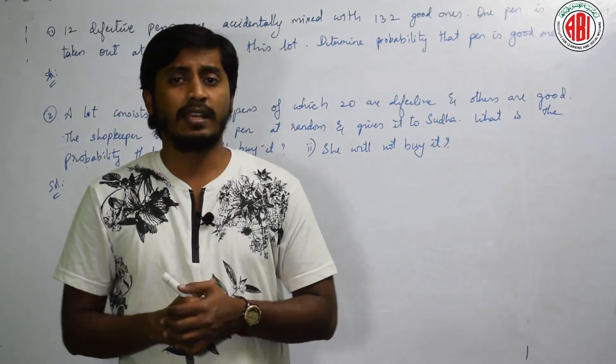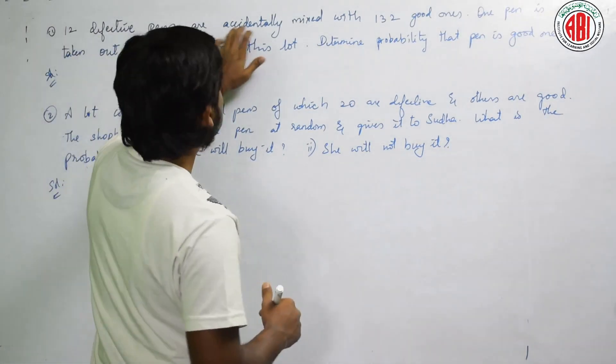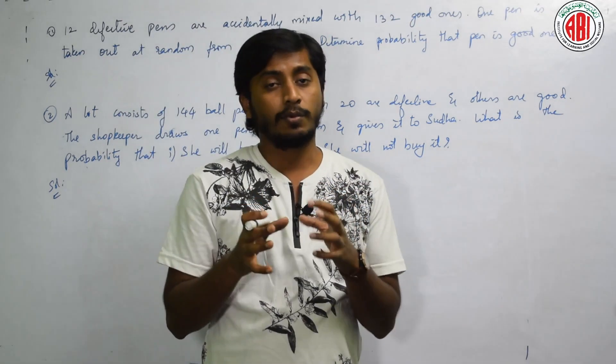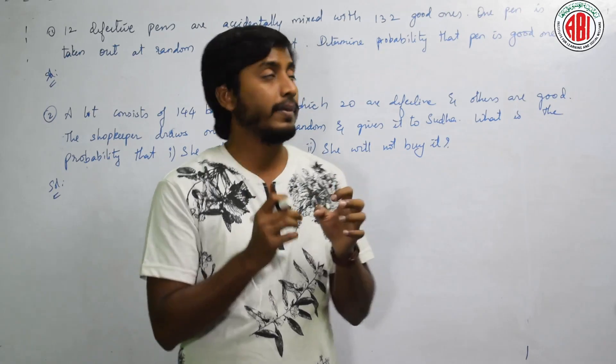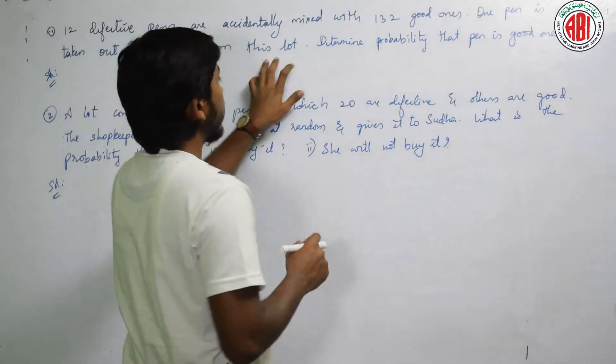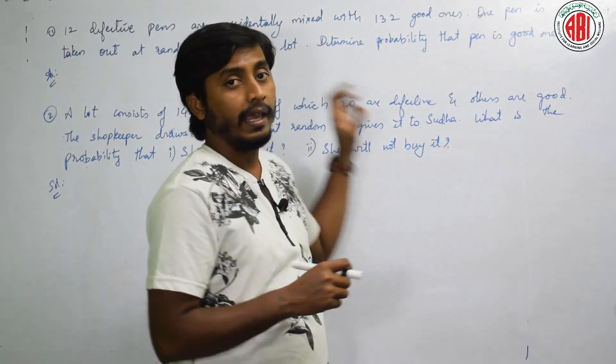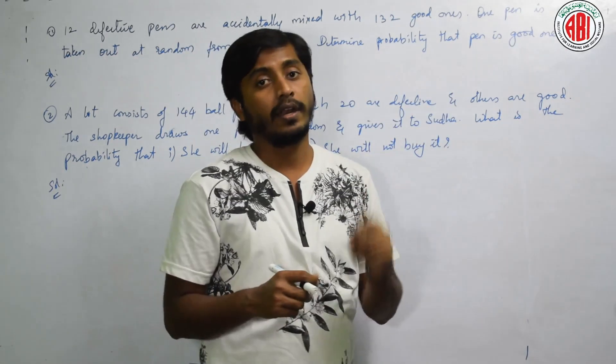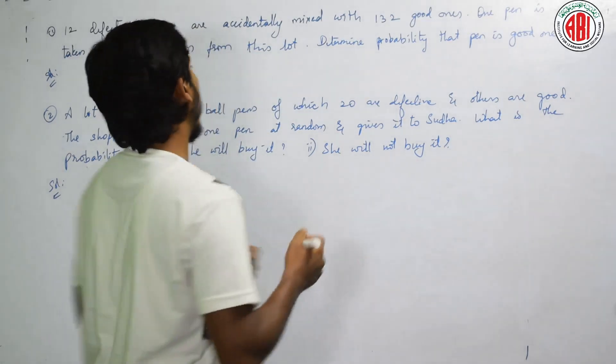See the next question here. The question given here is: 12 defective pens are accidentally mixed with 132 good ones. From this lot, one pen is selected at random. Determine the probability that the pen is a good one. Now we have to check whether the pen is good or not, that is, we have to find the probability.